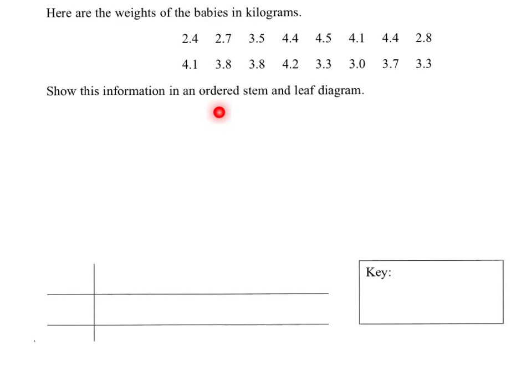So a straightforward stem and leaf diagram question. We've got the weights of babies in kilograms. We've got to put them into an ordered stem and leaf diagram and we've got to give them a key. So we'll start with a key. We'll write down that 2-4 gives us 2.4.